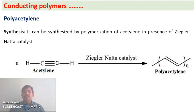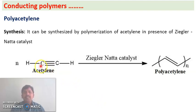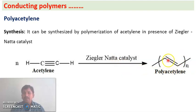Ziegler-Natta catalysts are of two types: homogeneous and heterogeneous, and they are extensively used for polymerization of alkenes. In the presence of Ziegler-Natta catalysts, acetylene (CH≡CH) undergoes polymerization — n number of acetylene molecules polymerize to give polyacetylene, which has a double bond in the repeating unit. This is the synthesis of polyacetylene.